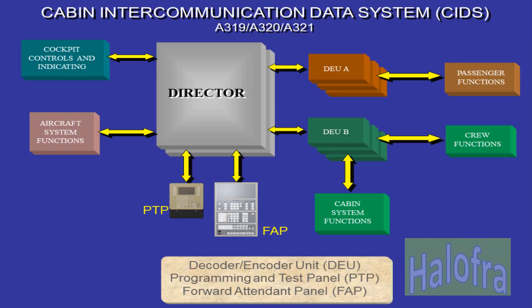The CIDS is composed of two directors, one in active mode and one in hot standby. It is linked to the Forward Attendant Panel for control and monitoring of the cabin functions. The director communicates through decoder-encoder units with the cabin, passengers and crew systems.